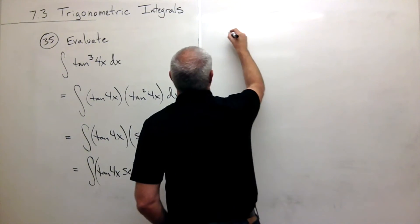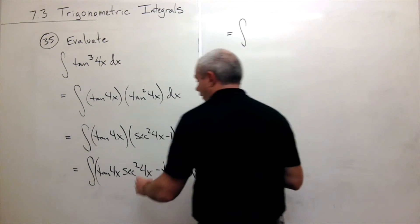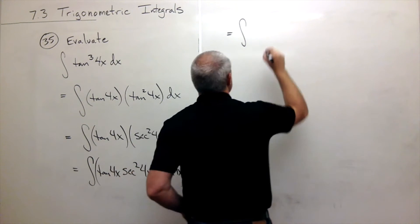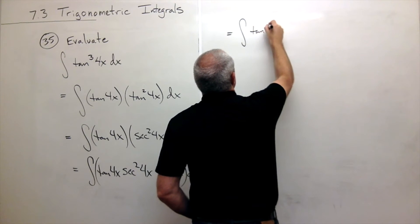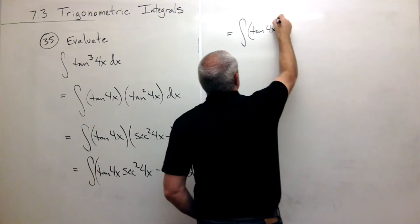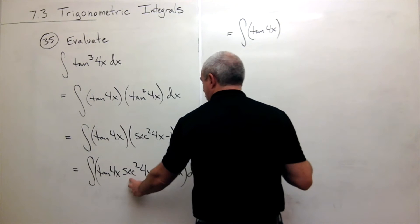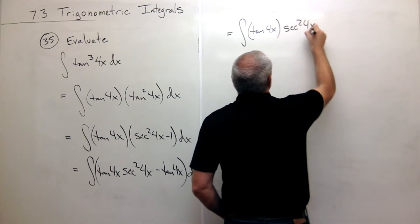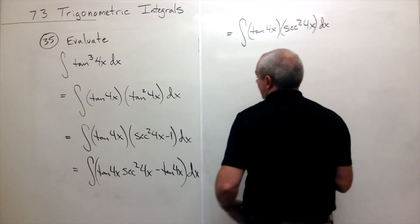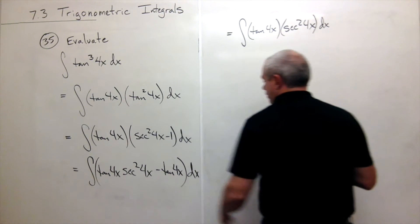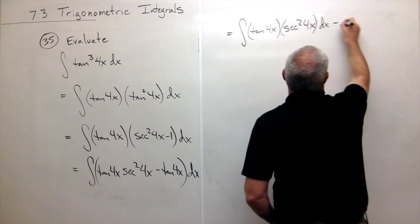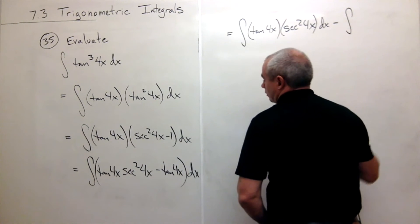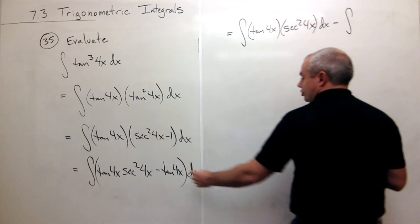The first piece is integral of tangent of 4x times secant squared of 4x dx. And then I've got a second integral, which is minus, I can put the minus outside the integral,